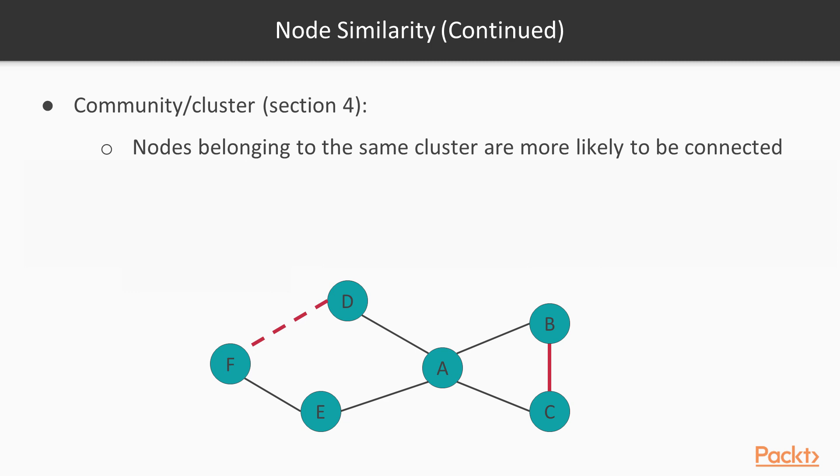Another feature that can be used to quantify the likelihood of two nodes being connected is the shortest distance between them. The closer they are in the graph, the more likely they can be connected.